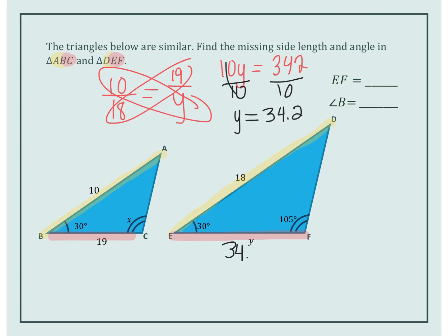So this side right here is 34.2. Now the angles, remember, similar shapes have congruent angles. So angle B is congruent to angle E.